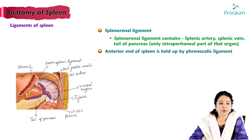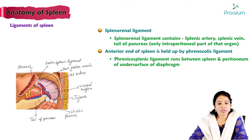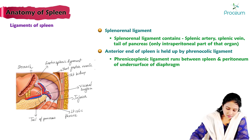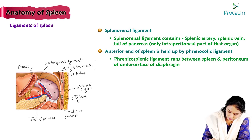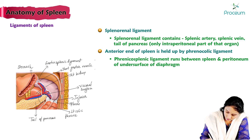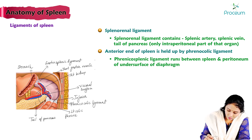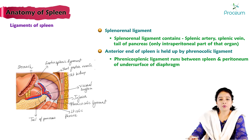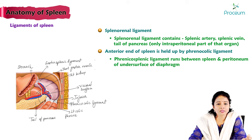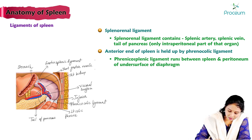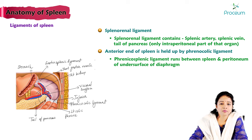The anterior end of the spleen is held up by the phrenicocolic ligament, which connects the diaphragm to the colon. The inferior pole of the spleen is connected to the splenic flexure of the colon by the phrenicocolic ligament. The phrenicosplenic ligament runs between the spleen and the peritoneum on the undersurface of the diaphragm.